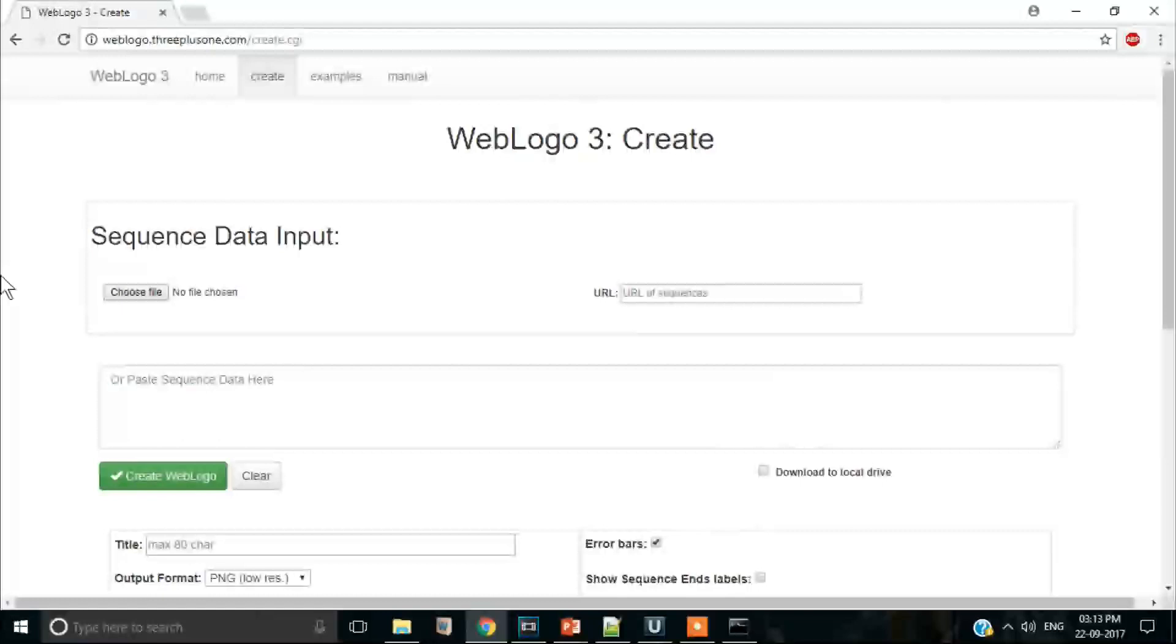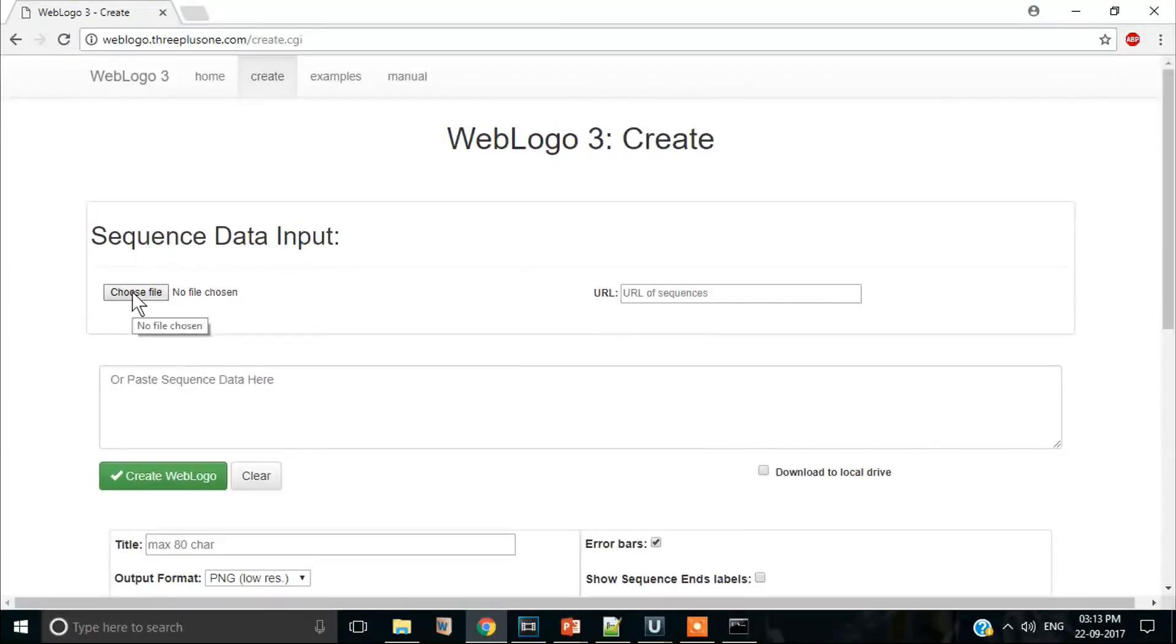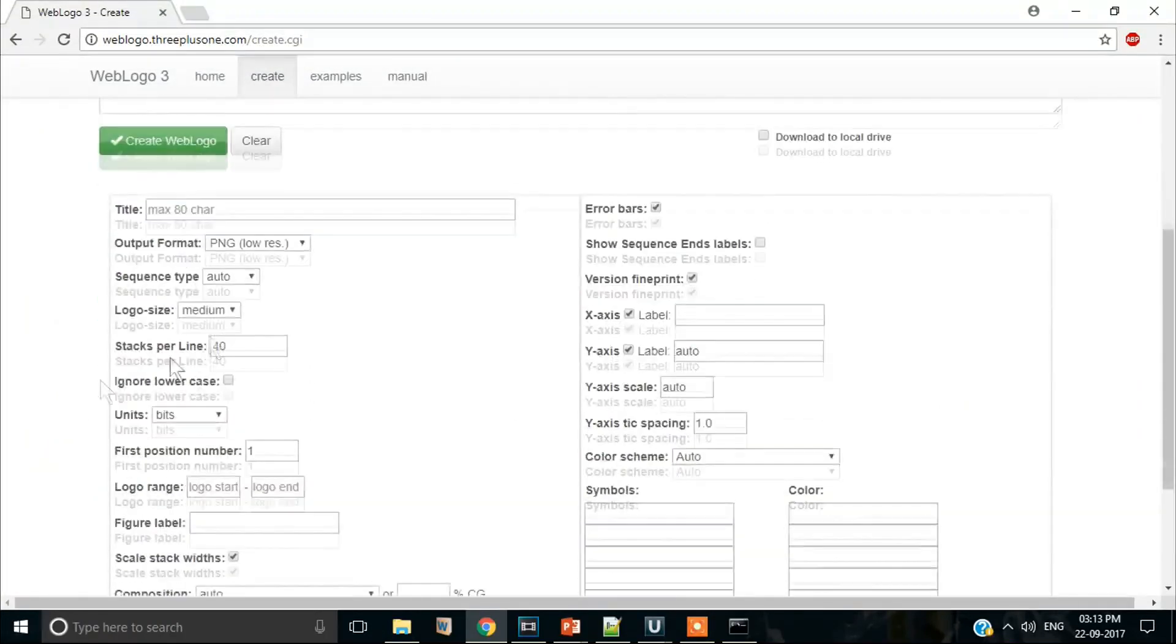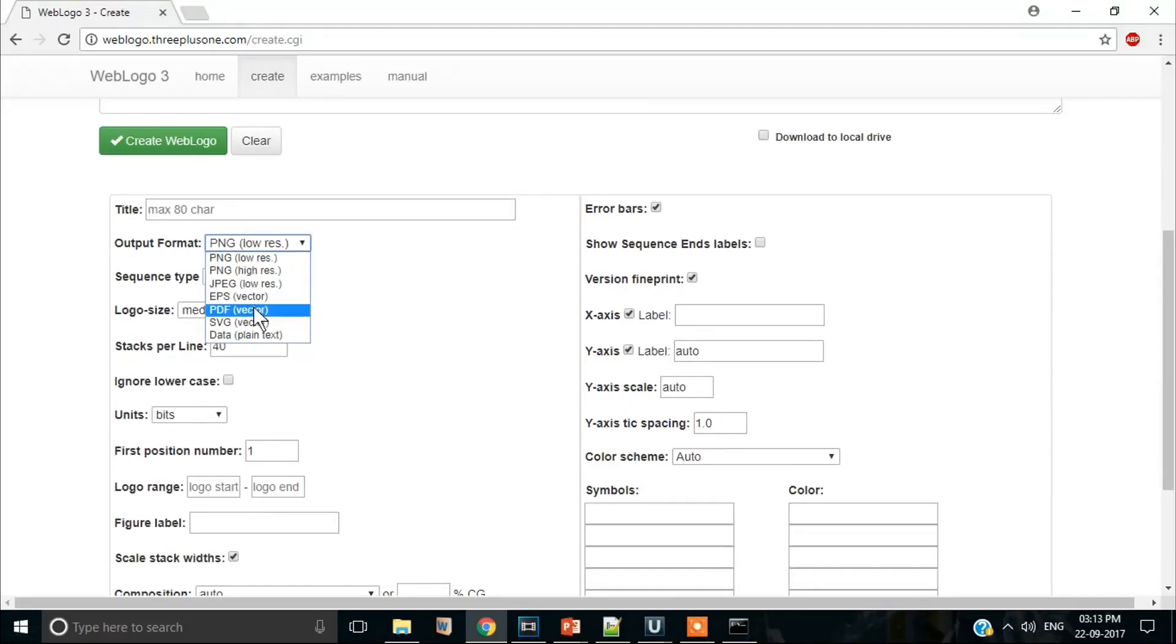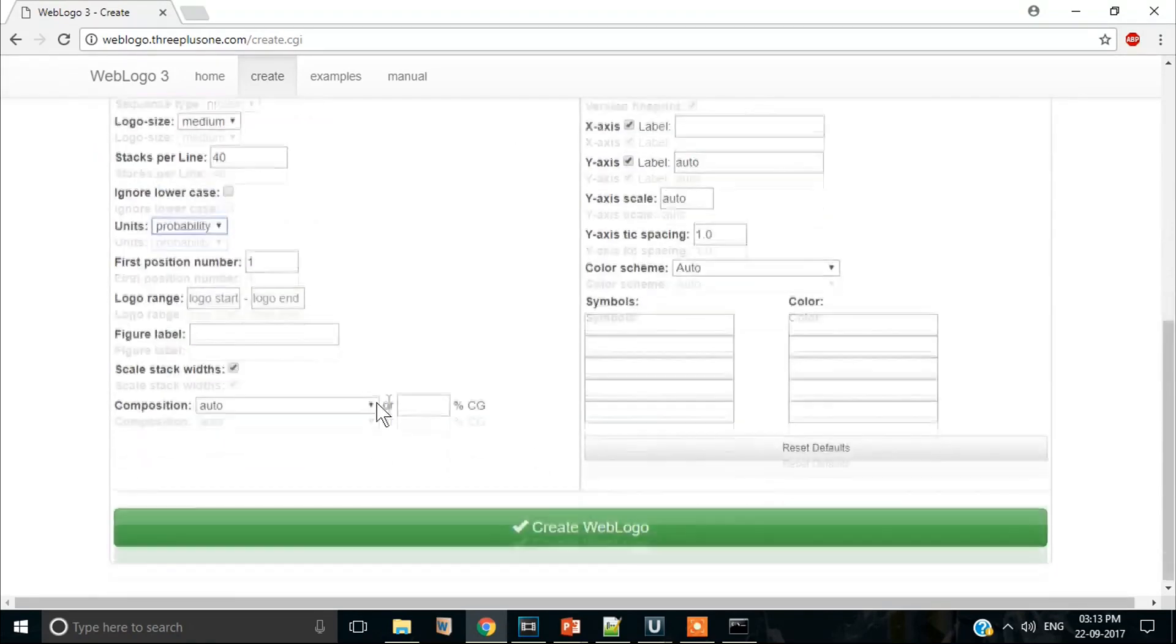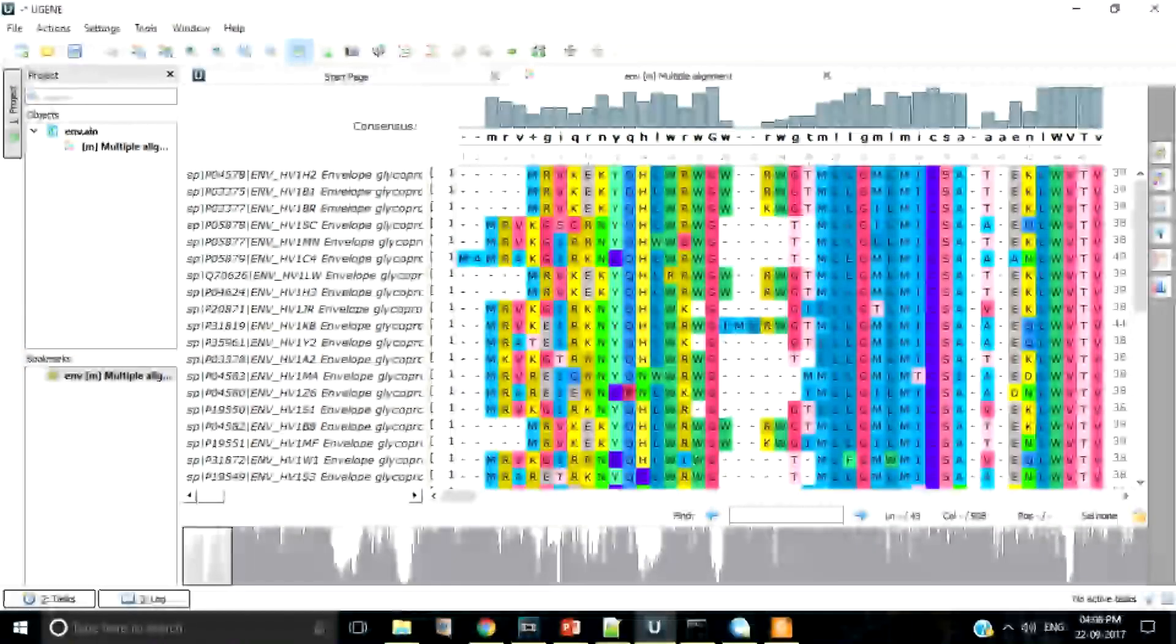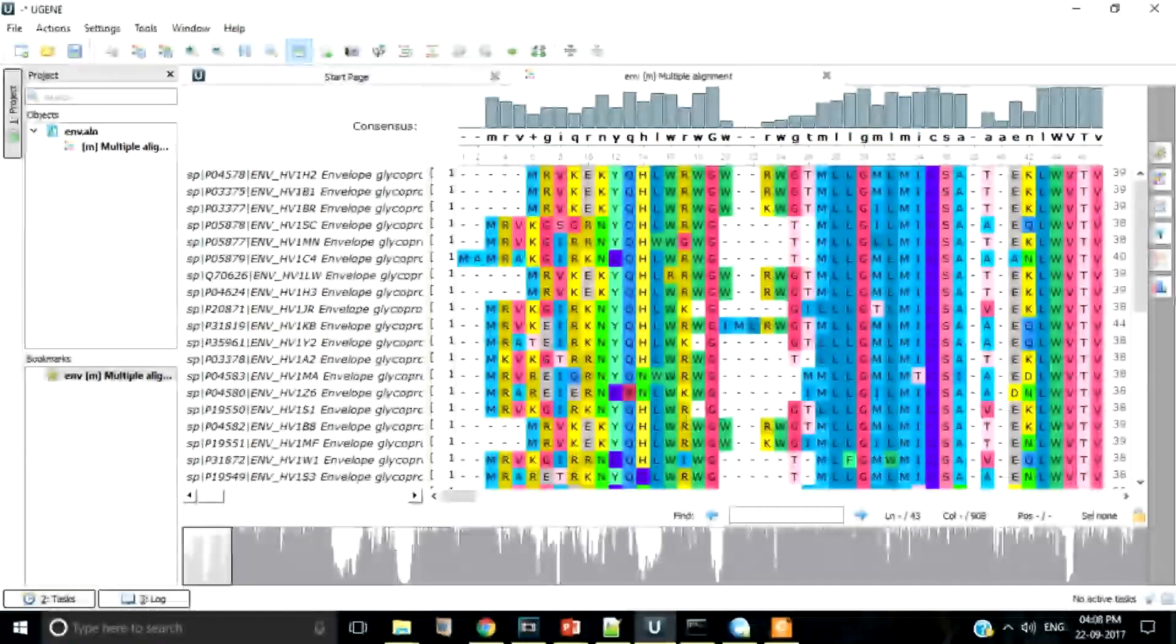Next step is to go to Web Logo Surfer. Just copy paste or upload your alignment here. Select output format PDF, sequence type protein, units probability and hit the create web logo button. There you go. See your logo file.